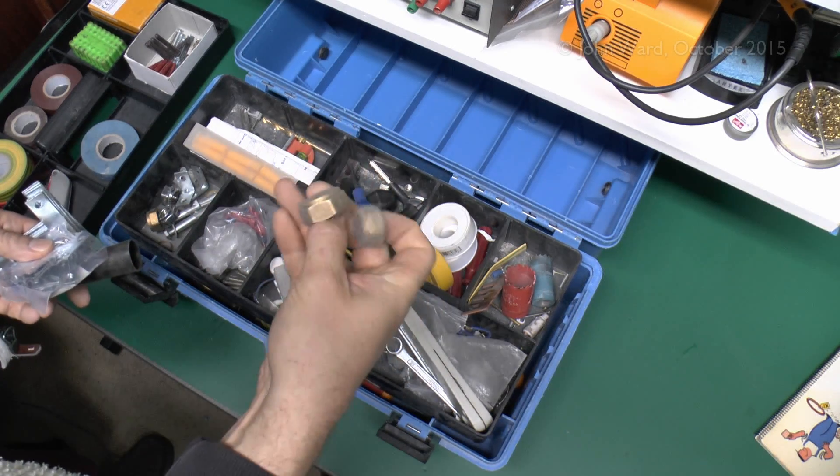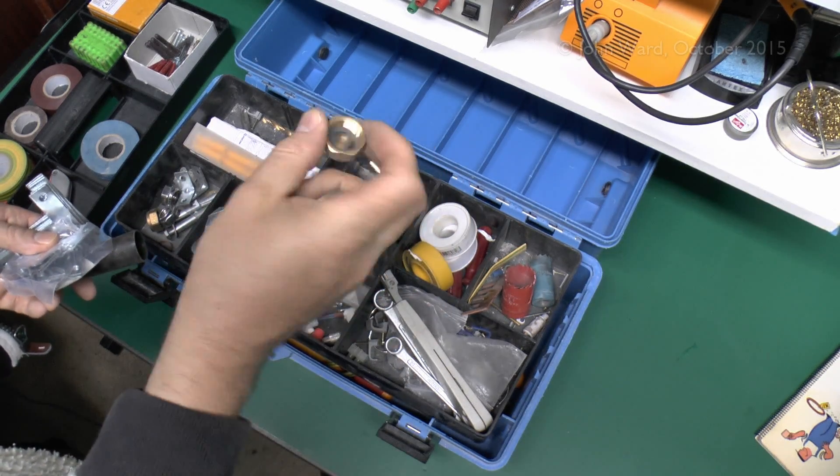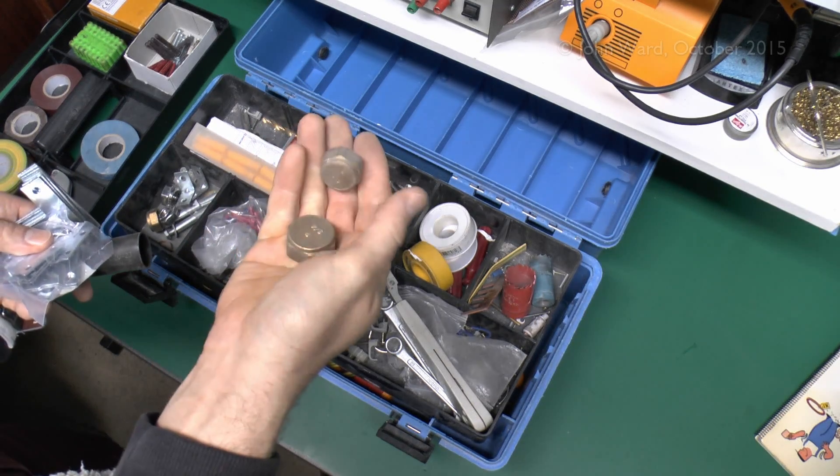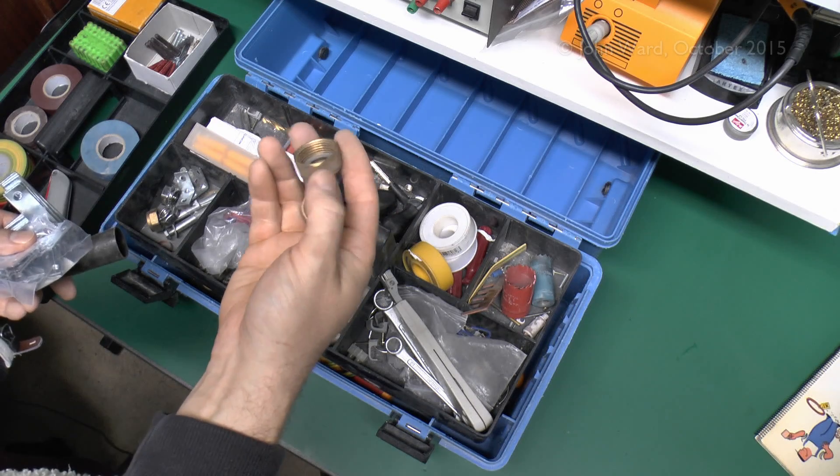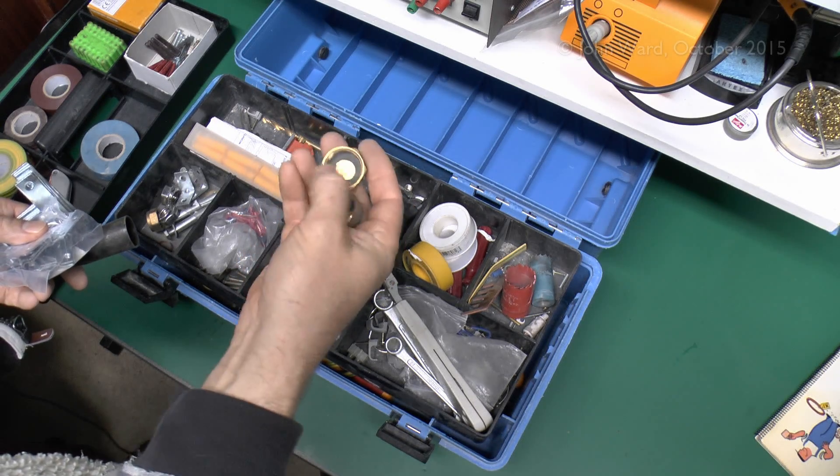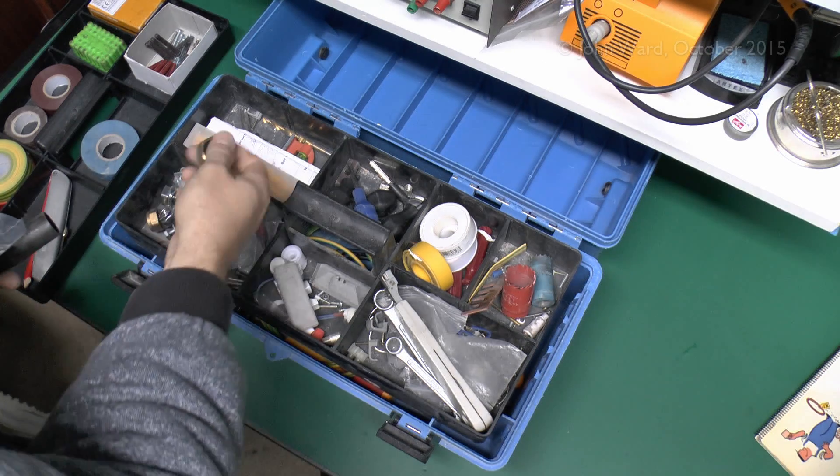And then we've got these caps here, which are just brass with a washer on the bottom. Those are useful if you're going to take off a radiator or something for example. So you unscrew the radiator and then that just goes over the end to seal it off temporarily, if you're going to decorate the wall or whatever.